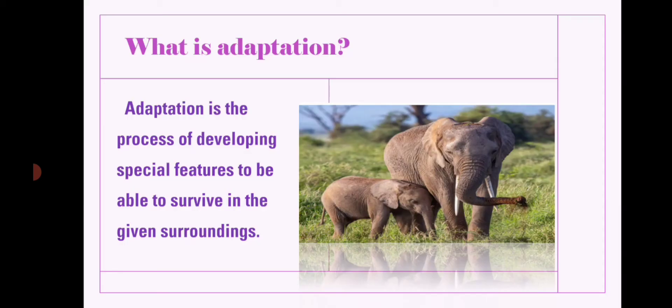Let us see what is adaptation. Adaptation is the process of developing special features to be able to survive in the given surroundings. For example, fishes have gills to breathe in water and can't survive on land. Camels have special features to survive in the desert, and frogs have special features to survive both on land and in water, so they are called amphibians. Each and every organism in this world has special features which adapt them to survive in their given surroundings. That is called adaptation.